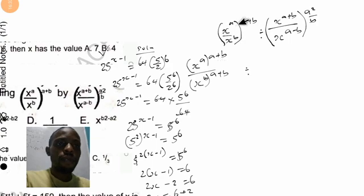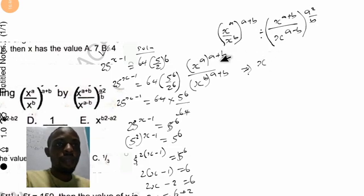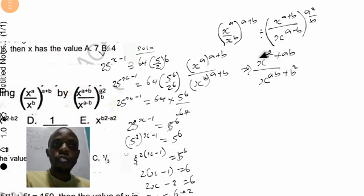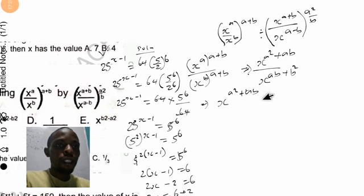Let's open the outer bracket using the power index law. We get s raised to the power of a, also raised to the power of a plus b, divided by s raised to the power of b, also raised to the power of a plus b. Let me solve each part separately. Applying the power index law to the first part: s raised to a times a plus b gives s raised to a squared plus ab.